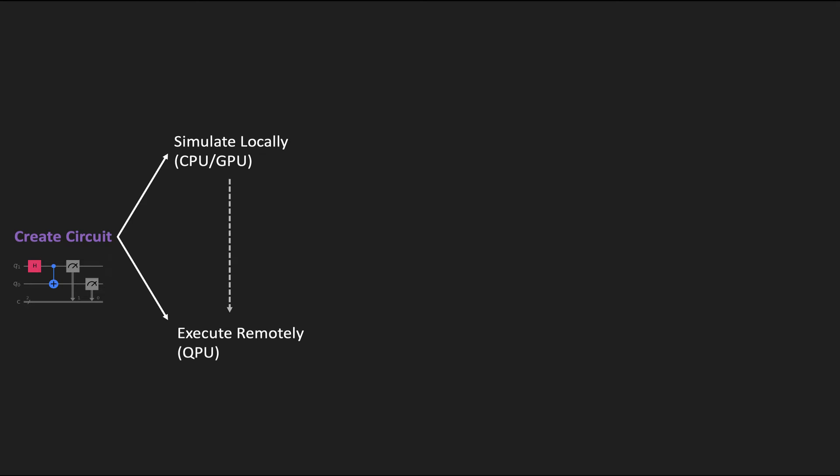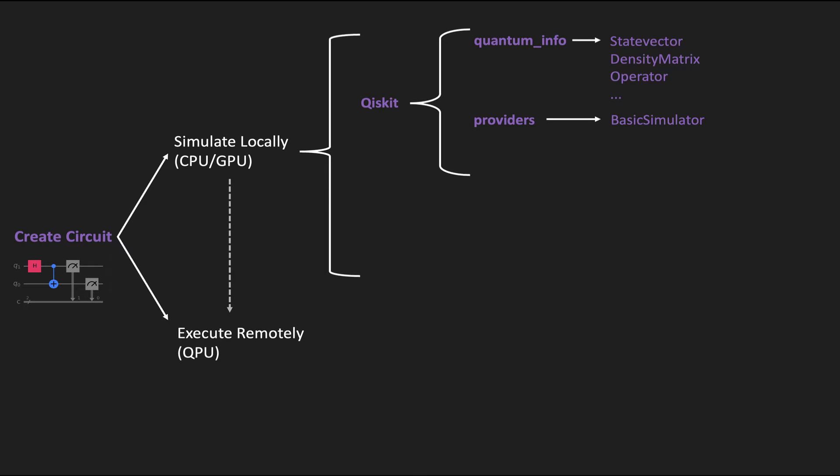We want the interface of the simulation and the interface of the execution on hardware to match as closely as possible. To do this, Qiskit had a few different ways to run simulations, and we'll cover these in the next few videos. There is also a separate package called Qiskit Aer, which consists of a series of highly optimized simulators in case we want to run larger circuits or include noise, so we'll spend some time talking about this type of simulation as well.